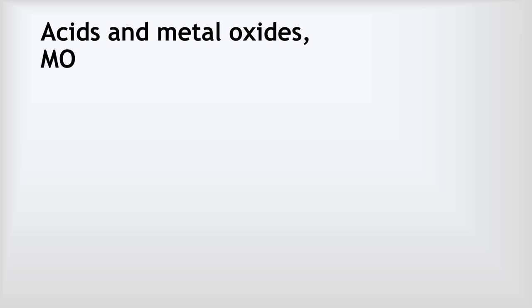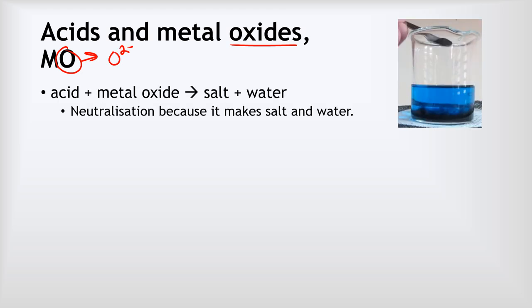Now, the reaction of acids with metal oxides. A metal oxide is a compound containing a metal and the oxide ion (O²⁻). When these react with acids, we get a salt and water — very similar to hydroxides. This counts as a neutralization reaction. The metal oxide is insoluble, so you will see it dissolve. If the oxide is a transition metal oxide, like copper oxide, you might also see a colour change.